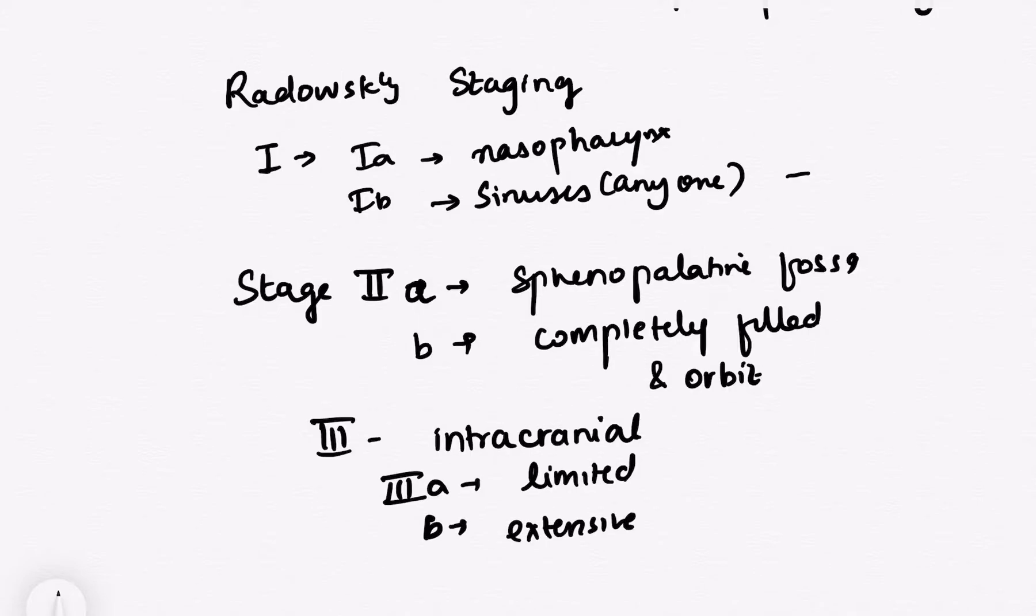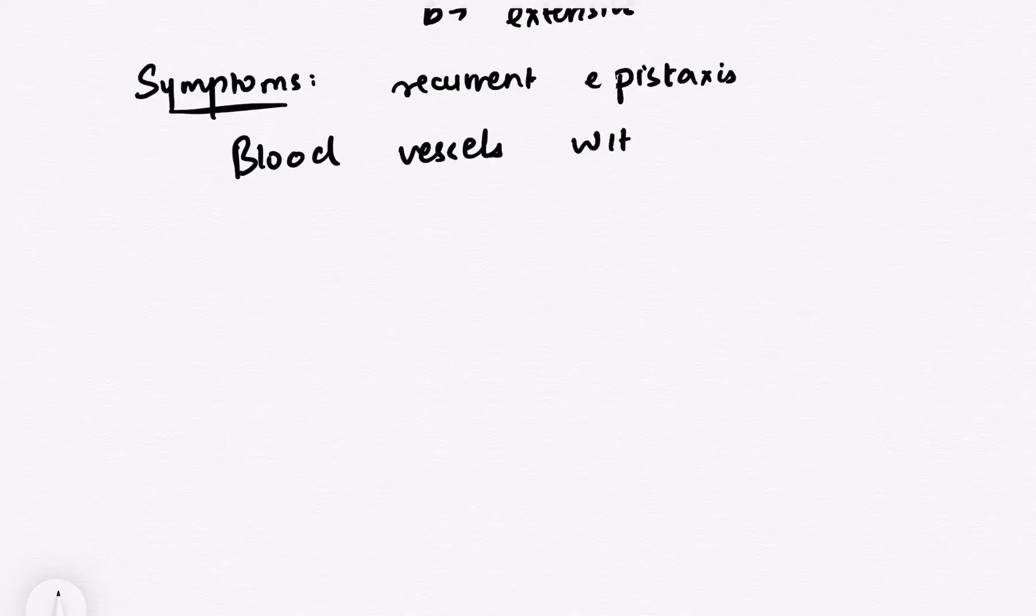Now talking about the symptoms, so basically the patient will have recurrent epistaxis. There is nothing to just mug up things because this angiofibroma is basically as the name suggests a tumor which is made up of blood vessels. The blood vessels do not have a contractile component because of which it bleeds easily and this is one of the reasons why biopsy is not taken in the angiofibroma. It is contraindicated because once the bleeding starts you cannot stop it and that is why the biopsy is contraindicated in the angiofibroma.